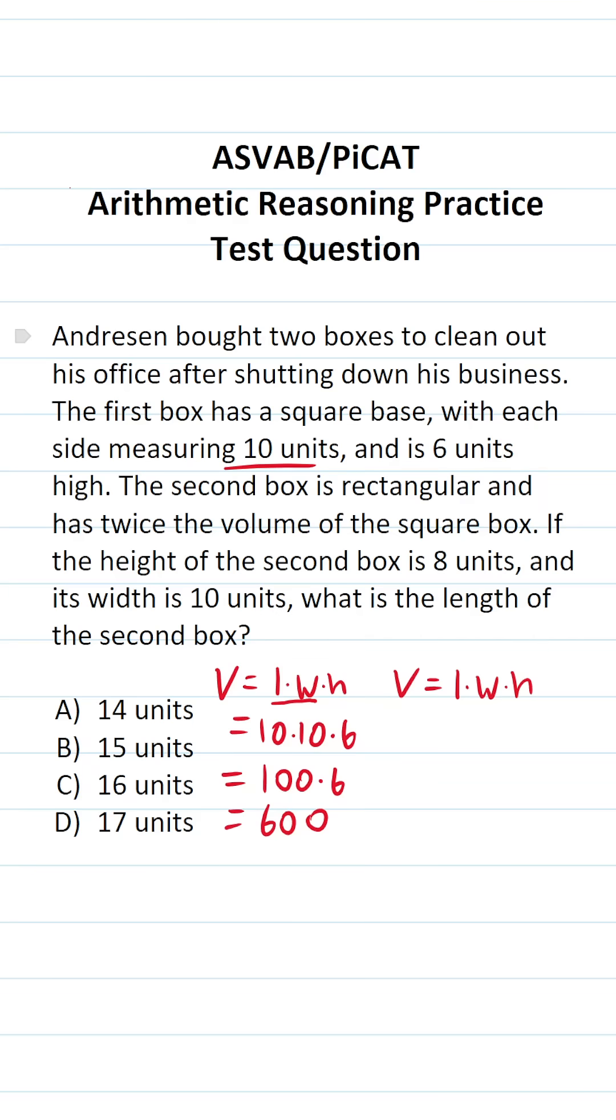What's more, we know the second box has twice the volume of the square box. So this value is going to be twice this value. 600 times 2, you should be able to do mentally, is 1,200. So the volume of this rectangular box is 1,200.